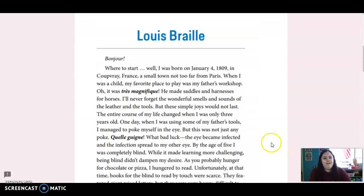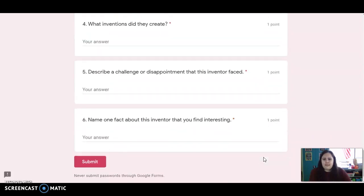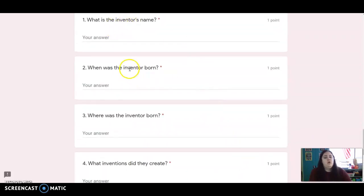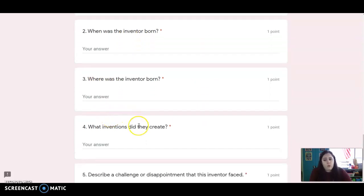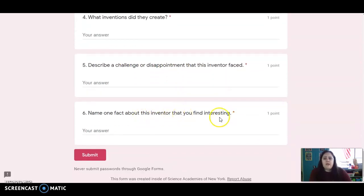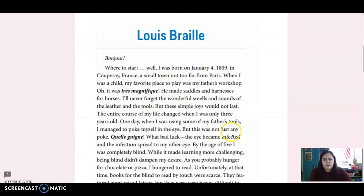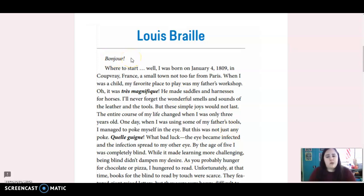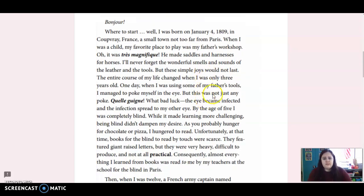So we're going to read about Louis Braille, and you guys are going to answer those same six questions. You're going to tell me what is his name, when was he born, where was he born, what inventions did they create, a challenge or disappointment that the inventor faced, and then one interesting fact. So this is Louis Braille. Bonjour! Where to start? Well, I was born on January 4th, 1809 in Coupvray, France, a small town not too far from Paris. When I was a child, my favorite place to play was my father's workshop. Oh, it was très magnifique. He made saddles and harnesses for horses. I'll never forget the wonderful smells and sounds of the leather and the tools. But these simple joys would not last.